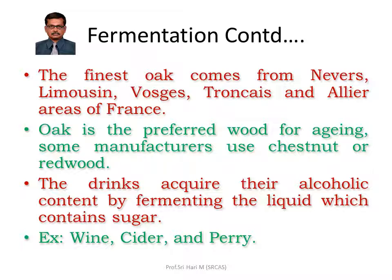The finest oak comes from Nevers, Limousin, Osages, Tronçais, and Allier areas of France. Oak is the preferred wood for aging, though some manufacturers use chestnut or redwood. The drinks acquire their alcoholic content by fermenting a liquid which contains sugar — for example, wine, cider, and perry.